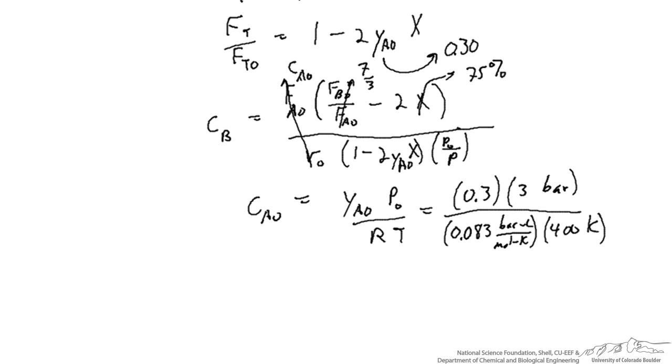Finally, if we just plug those numbers in directly here for CA0, we've done everything we need to do to solve for the concentration of B, and so what I get for the concentration of B is 0.027 moles per liter.